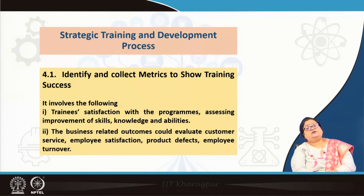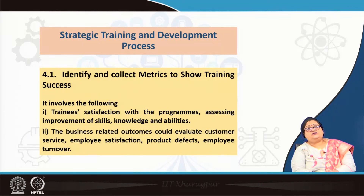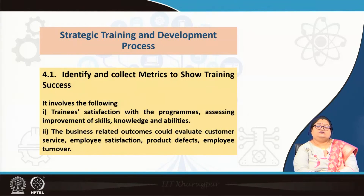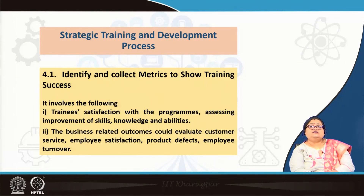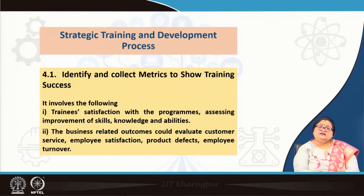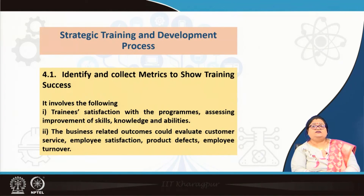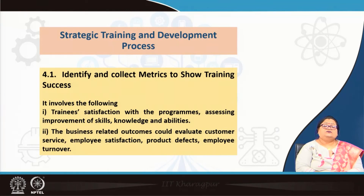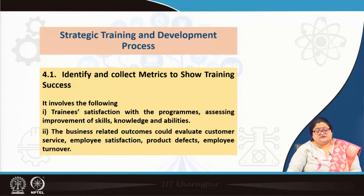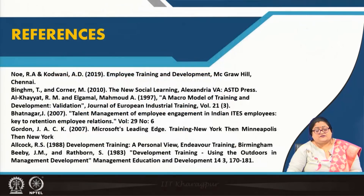The steps to collect metrics begin with identifying and collecting metrics to show training success. First, we assess training satisfaction with the program and improvement of skills, knowledge, and abilities. The second part involves business-related outcomes such as changes in customer service, employee satisfaction, product defects, and employee turnover.